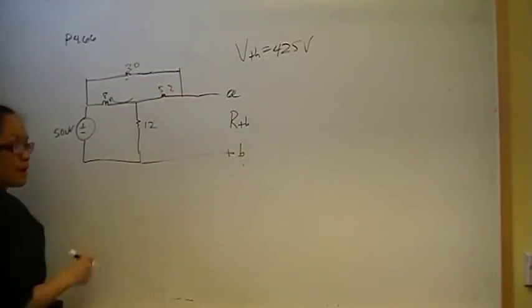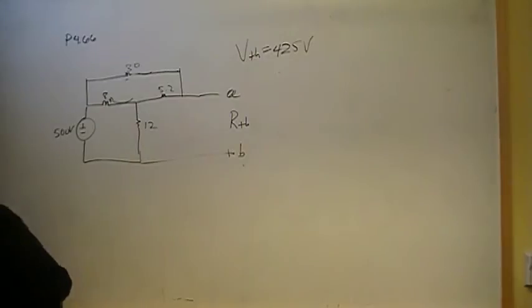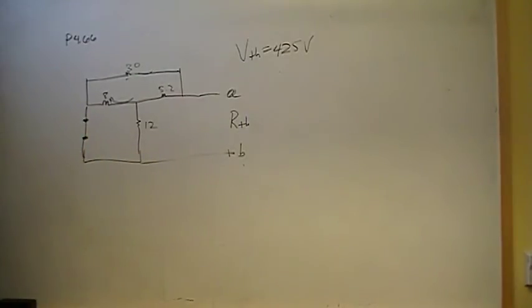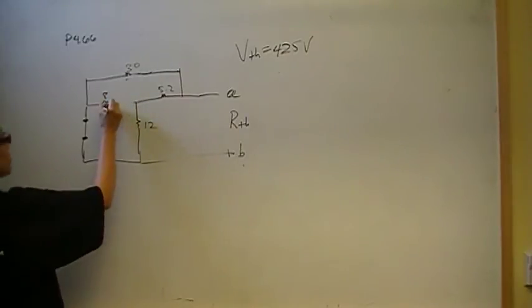This was 30, I think. Yep, that was 30. And then we're going to short the voltage source. So now that is shorted. So sometimes the Thevenin resistance is kind of hard to see. For me it is. I'll just speak for myself. Sometimes it's hard to see.